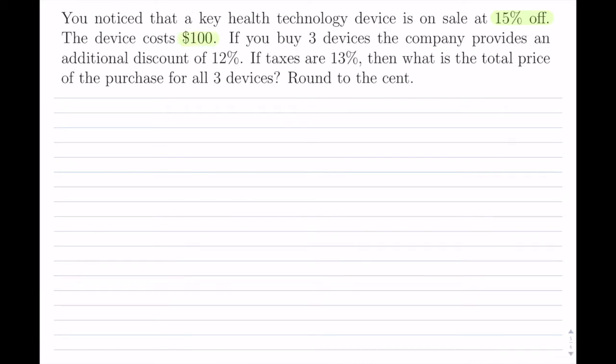If you buy three devices, the company provides an additional discount of 12%. Taxes are 13%. Now we want to know the total price if you purchase all three.